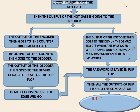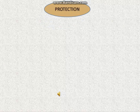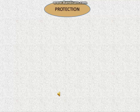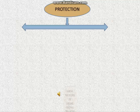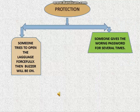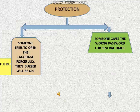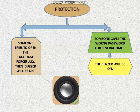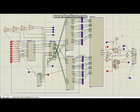The output of the flip-flops is fed to the comparator set, and the output of the comparator set indicates if the input password is right or wrong. The next part of the project is the protection part. If someone tries to open the luggage forcefully, or if someone gives the wrong password several consecutive times, then a buzzer will be activated.